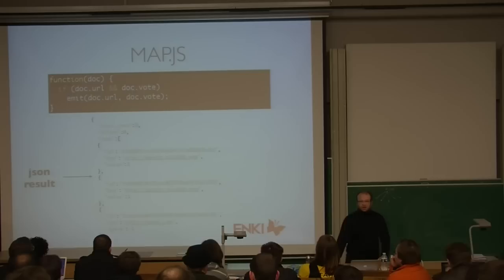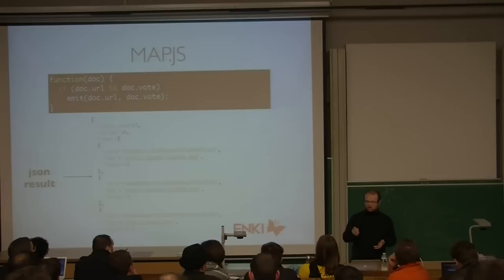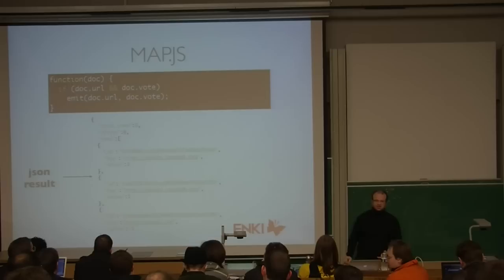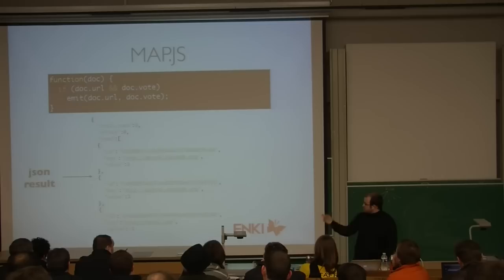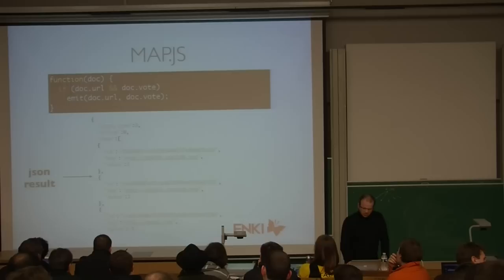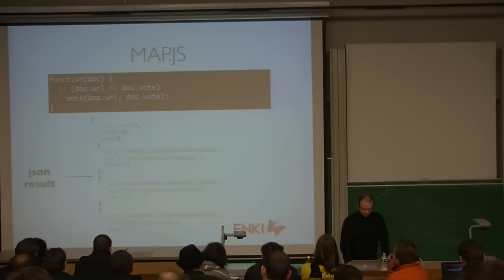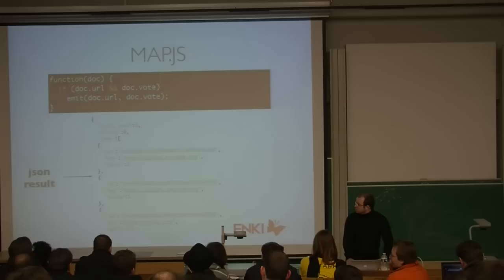Here's the result at the bottom. It works like this: each time you save a document, nothing happens immediately. But when you call your view, the documents saved since the last time will be passed as arguments to the function, which emits values that get indexed on disk. So you get a list of results in JSON. The view information includes the number of rows, the offset if you've limited your view, and the result: the document ID, the key (which is the URL), and the value (the vote).